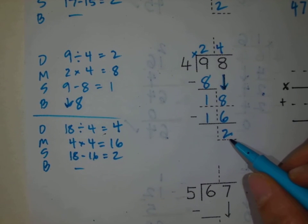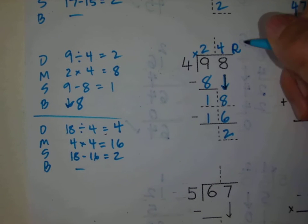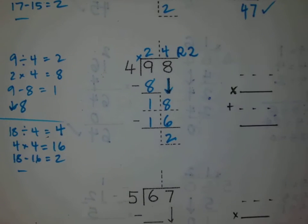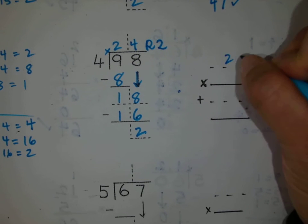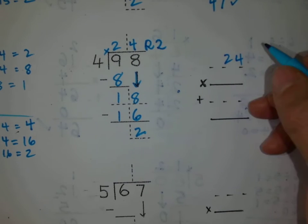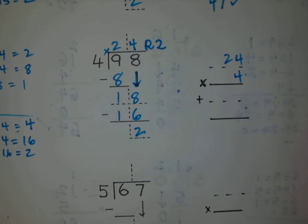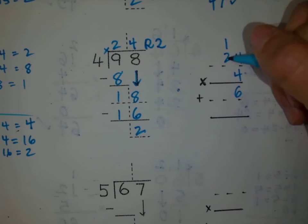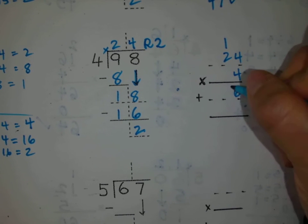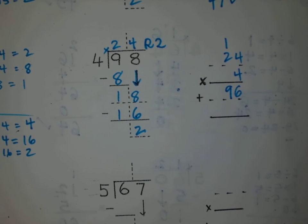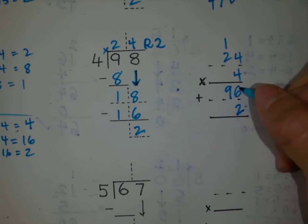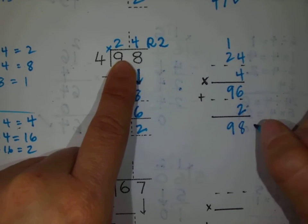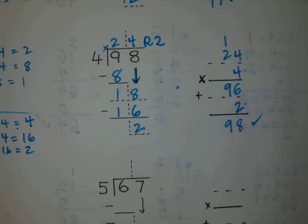Brother does have a remainder that he should take care of. I'm going to write an R and the remainder next to it. Let's check our work: take our quotient, 24, and multiply with our divisor, 4. 4 times 4 is 16, 2 times 4 is 8 plus 1 is 9. We have a remainder of 2. 6 plus 2 is 8, and 9 — that's 98. Check! This is the same as my dividend.